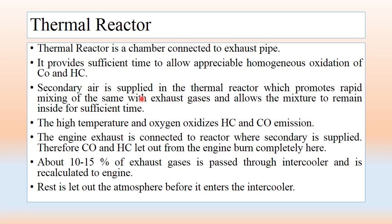This thermal reactor is a chamber connected to the exhaust pipe. It provides sufficient time to allow appreciable homogeneous oxidation of HC and CO. Secondary air is supplied in the thermal reactor, which promotes rapid mixing with the exhaust gases and allows the mixture to remain inside for sufficient time. The high temperature and oxygen oxidize HC and CO emissions. About 10–15% of exhaust gases is passed through an intercooler and recirculated to the engine, which reduces the temperature of the exhaust gases and also helps reduce oxides of nitrogen.